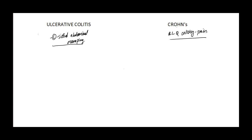Although Crohn's Disease is usually only associated with diarrhea, while Ulcerative Colitis is associated with diarrhea and rectal bleeding, both can present with diarrhea and bleeding. Ulcerative Colitis is going to primarily involve the rectum, while Crohn's Disease most of the time is going to be the terminal ileum. The terminal ileum absorbs B12, so these patients are going to get B12 deficiencies — that's the vitamin deficiency associated with this.